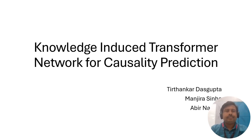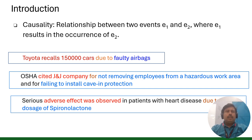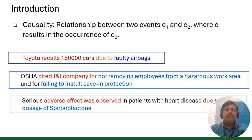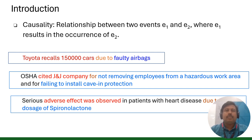The concept of causality actually arises from the linkage between an initial event, denoted as E1, and a subsequent consequence labeled as E2. Often they are expressed as E1 causes E2.